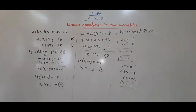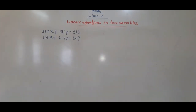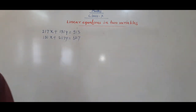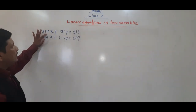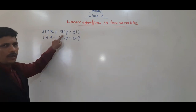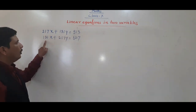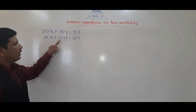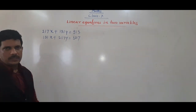Very simple process. Please see carefully and solve in order. One more example is given: 170x + 131y = 930 and 131x + 270y = 827.